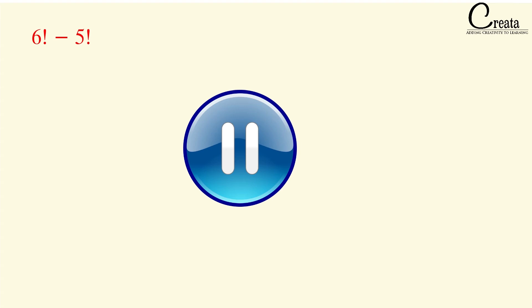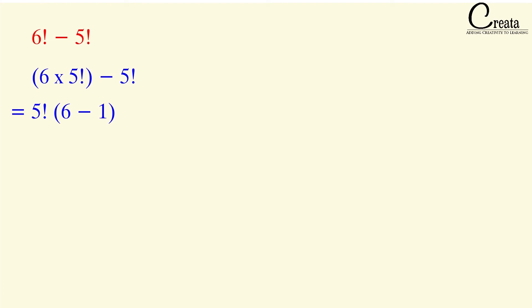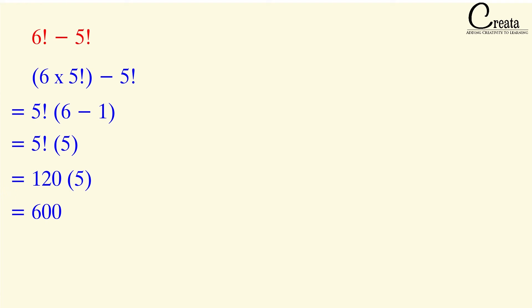Let's take one more question: 6 factorial minus 5 factorial. Pause the video and try to solve the question. Can we rewrite 6 factorial as 6 into 5 factorial? Let's take 5 factorial as common from this term. We get 5 factorial into (6 minus 1), which is 5 factorial into 5. We know 5 factorial is 120, so we got our answer as 600.